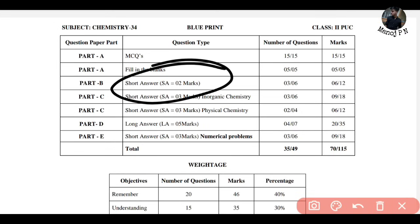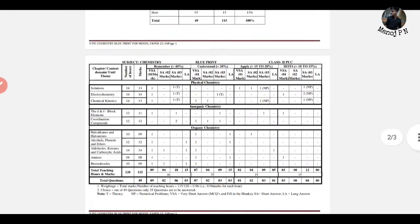When you look at the blueprint, you have MCQs - 5 marks and 5 questions. Short answer with 2 markers - total 3 questions, 6 marks. You'll have physical chemistry which is 4 questions, 3 markers with 50-50% chances. Long answer 5 marks, total 7 questions out of which you have to write only 4. Numerical - 14 questions out of which you write only 5. Total 115 marks paper, you write only for 70 marks.